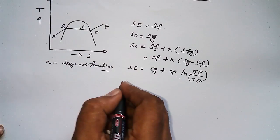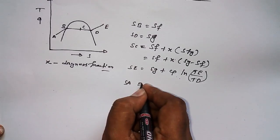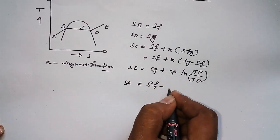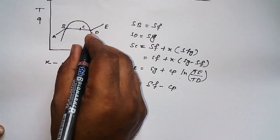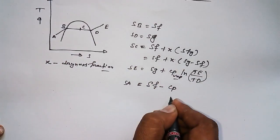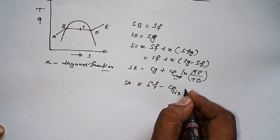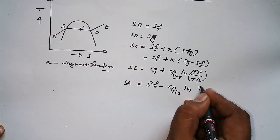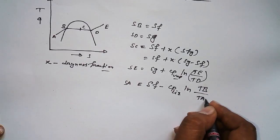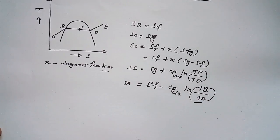And if I wanted to find out entropy at this point, S_A, therefore S_f minus C_p - here C_p would be vapor, here C_p would be for liquid - times natural log T_B by T_A.